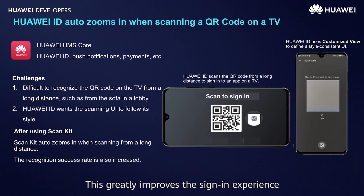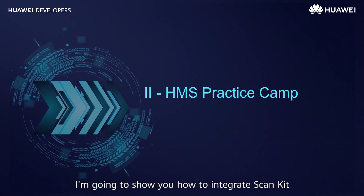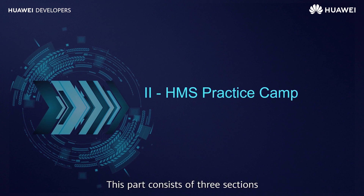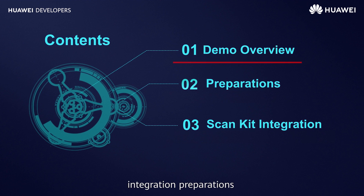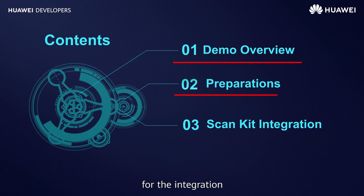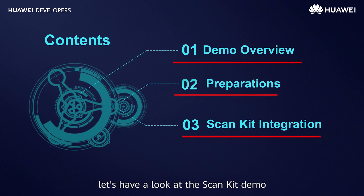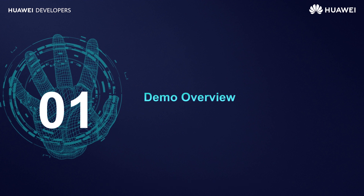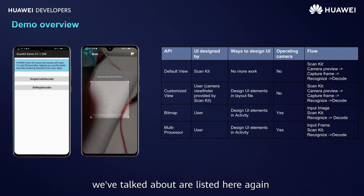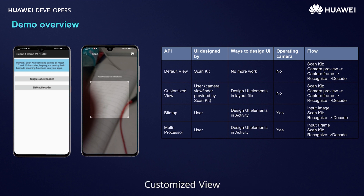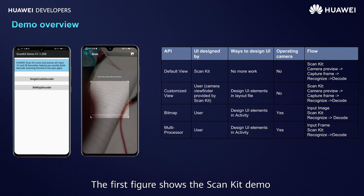This greatly improves the sign-in experience. Now I am going to show you how to integrate ScanKit. This part consists of three sections: ScanKit demo, integration preparations, and step-by-step instructions for the integration. First, let's have a look at the ScanKit demo. The four integration modes are listed again: default view, customized view, bitmap, and multiprocessor. The first feature shows the ScanKit demo, and the second is the scanning screen in default view mode.